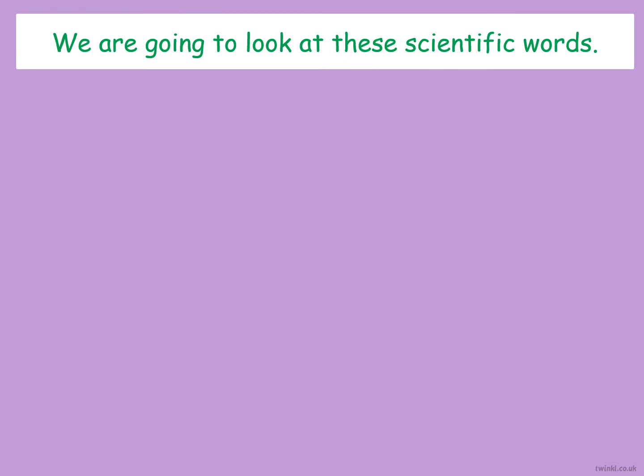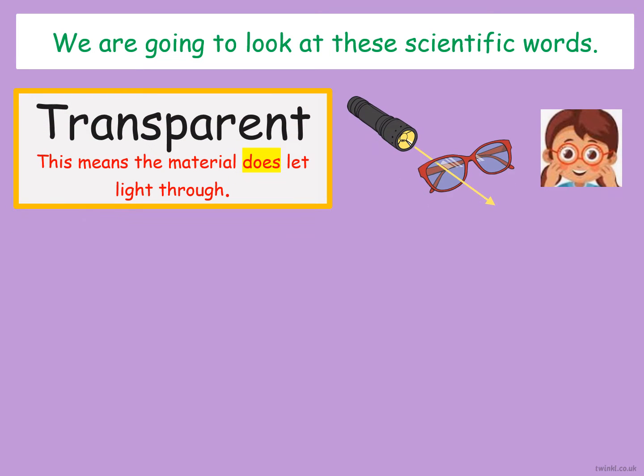So now, today we are going to look at three different scientific words. The first one is transparent. Transparent means the material does let light through. So a transparent material — if you look at the screen, you can see that the torch has its light on and it's shining its light on the glasses, and the light goes through the glasses towards the other side. So that means it does let light through. You can see through it.